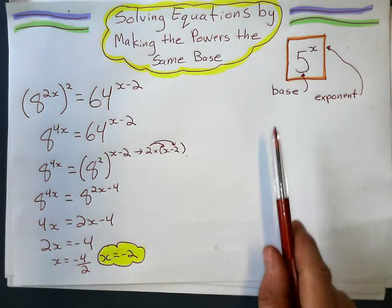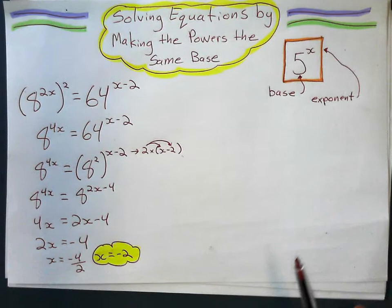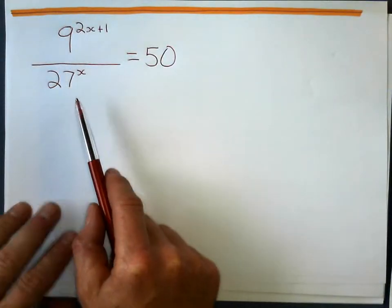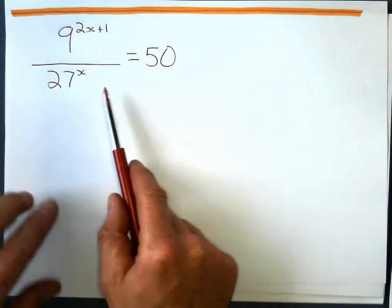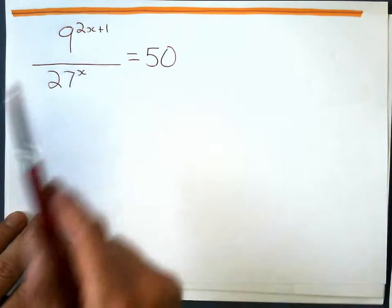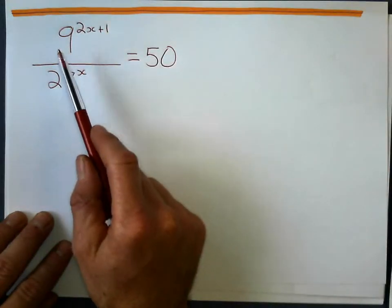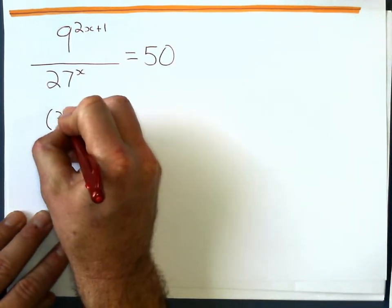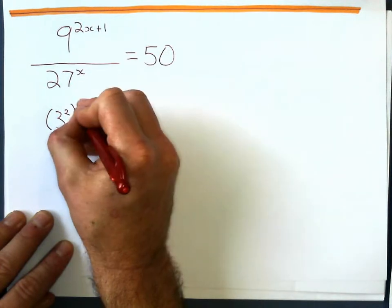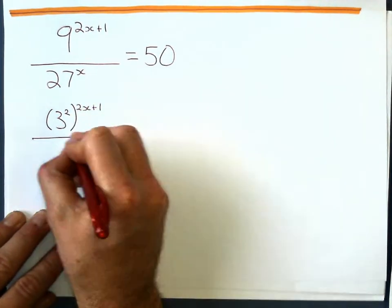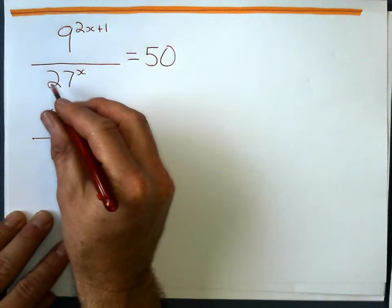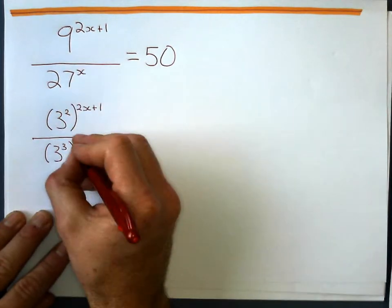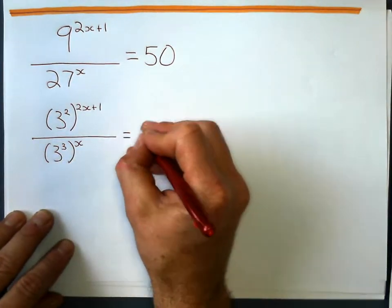So no logarithms needed there. Let's look at another example similar to this where we may or may not use logarithms. In this example, I've got the division of these two powers is going to give me 50. And I look at the two bases, 9 and 27, and I say they're both powers of 3. So I'm going to rewrite this 9 as 3 squared to the power of 2x plus 1. And 27 is a power of 3 as well, it's 3 cubed, 3 cubed to the power of x equals 50. Don't forget that.